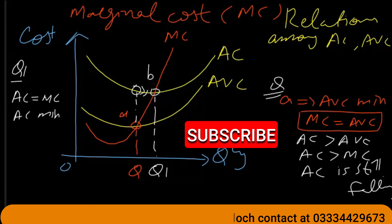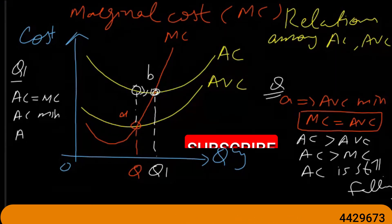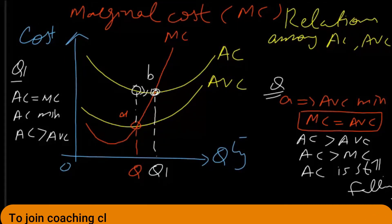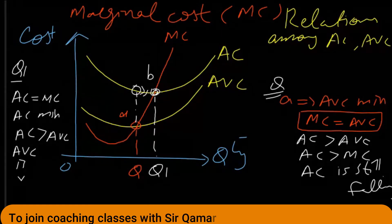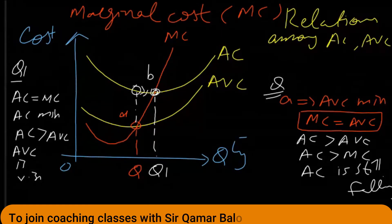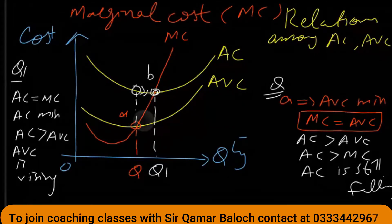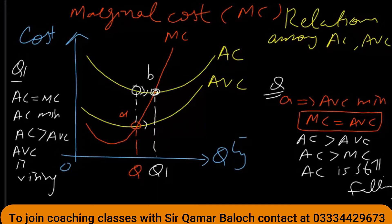At point B, average cost is minimum and is still greater than average variable cost. Beyond this point, average variable cost is rising.